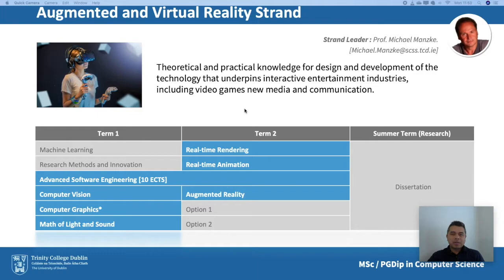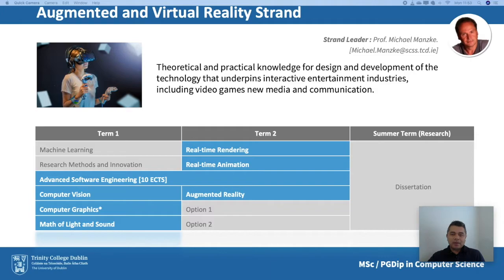Another key module is computer graphics, which deals with representing information on the computer screen — used in games and virtual reality, but also in medical and scientific simulation, visual analytics, and industrial visualization. In the second semester, more specialized topics include real-time rendering and real-time animation, dealing with high-performance creation of complex imagery and realistic motions. The augmented reality module combines computer vision and graphics, including tracking, for novel interaction modalities and for presenting virtual information co-located with real-world information.